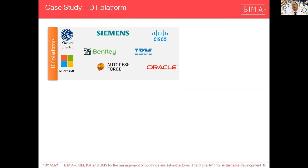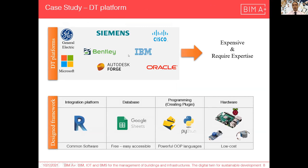There are different solutions — very powerful ones offered by Siemens, Bentley, IBM and so on — but most of them are very efficient in mega projects and require expertise, so they are expensive and require more expertise for medium and small projects. For this project, I decided to design my own platform. I use Autodesk Revit as an integration platform, Google Sheets as a free and accessible database, Python and PyRevit for plugin development, and Raspberry Pi with related sensors and actuators as low-cost devices.